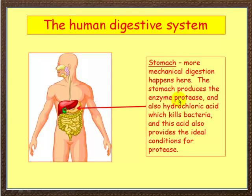The stomach produces the enzyme protease and also an acid, hydrochloric acid, which kills bacteria. It also provides ideal conditions for protease.